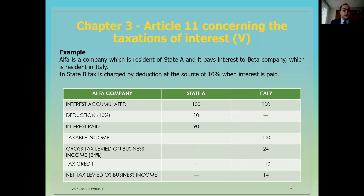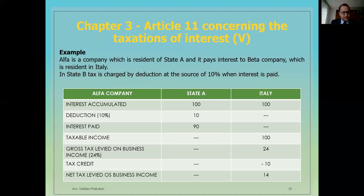This is a simple example. Alpha is a company which is resident of State A and it pays interest to Beta Company, which is resident in Italy. In State A, there is a charge by deduction at the source of 10% when interest is paid. Interest accumulated by Alpha Company is, for example, 100. State A applies a deduction at a 10% rate on 100 interest accumulated, so the tax charge is 10. Alpha pays to Beta Company interest of 90.